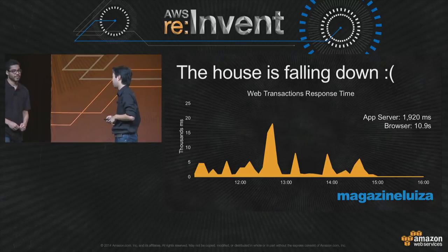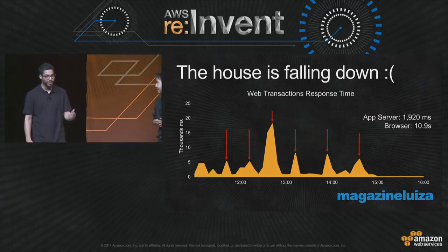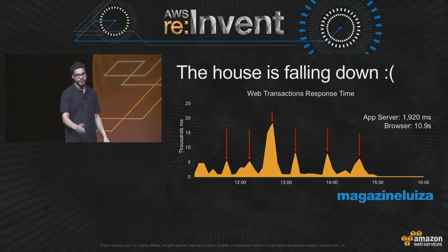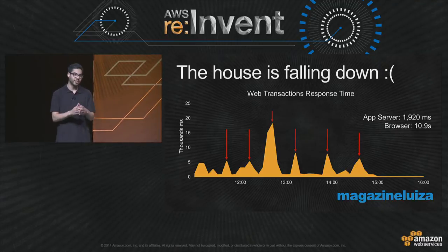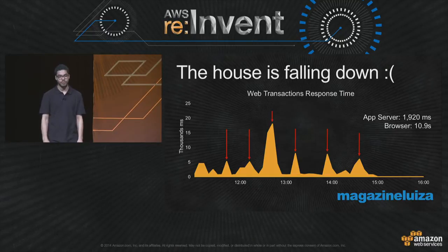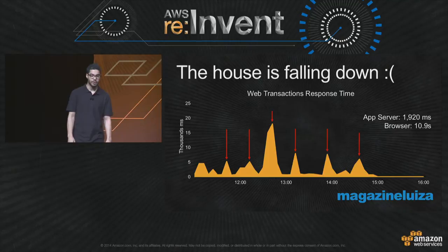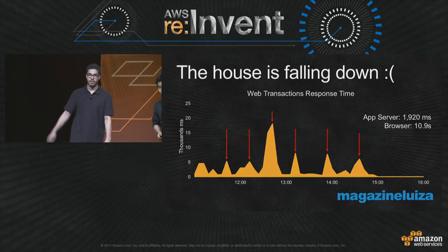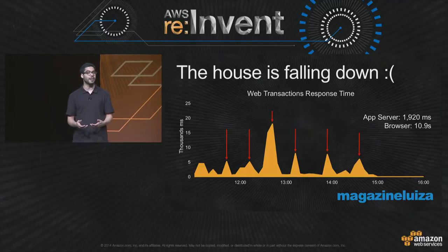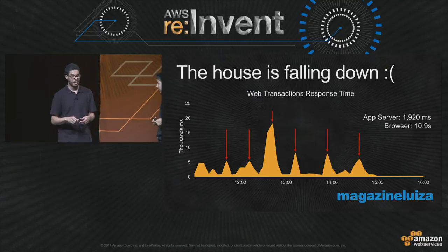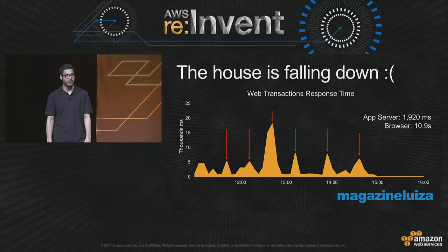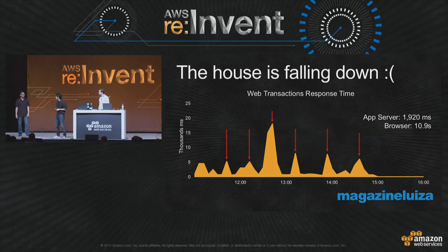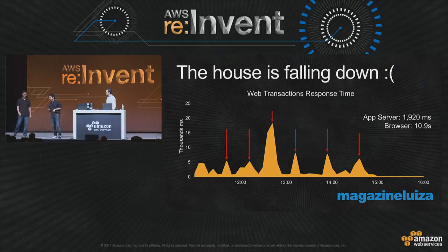It doesn't matter how much time and effort you put into your application. If you leave one single component and that fails, your whole website will go down. We had an example of this: we launched a version of our e-commerce application with a bug, and after some time our application just started going crazy. As you can see in the graph, it took almost five hours to analyze, identify, and send a bug fix. It was a really tiny thing on our cache layer — someone decided to develop a local cache layer in Java.